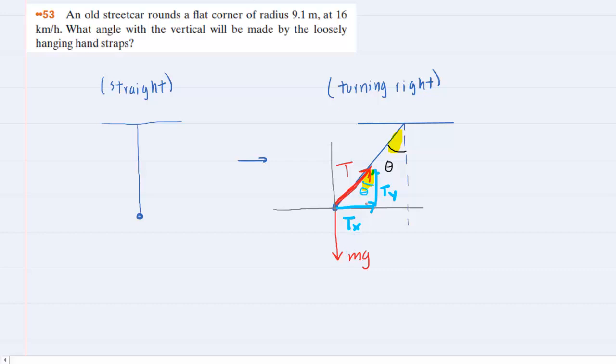From this right triangle we've drawn, we can come up with expressions for T sub X and T sub Y. If we look at our angle carefully, the sine of our angle equals the opposite side, T subscript X, divided by the hypotenuse T. Solving for T sub X by multiplying both sides by T, we get that the X component of tension is T sin θ.